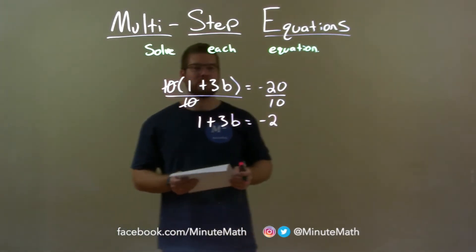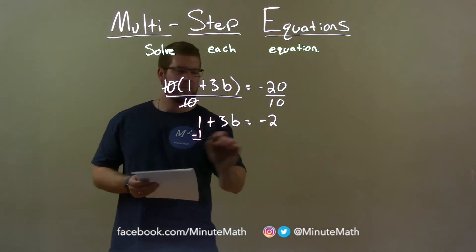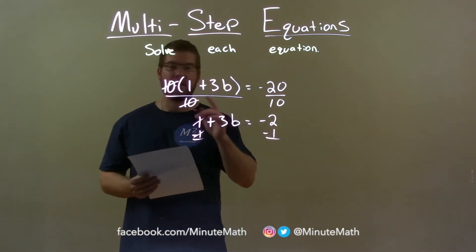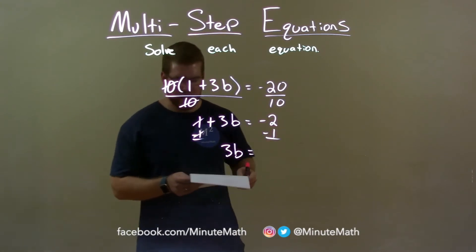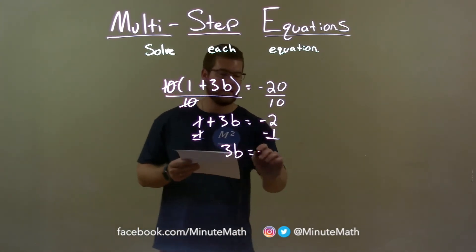Now it looks a lot more simple. Subtract one to both sides, ones get eliminated there and we have 3b equals negative 2 minus 1 is negative 3.